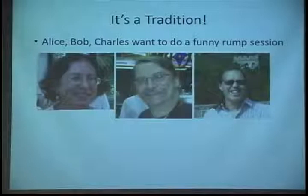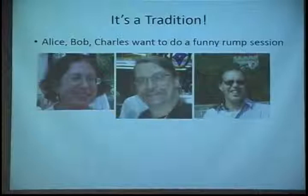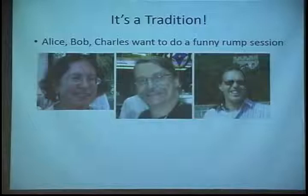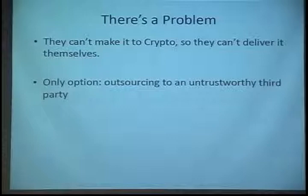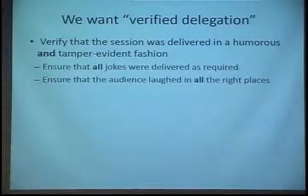This actually motivates the problem that we want to study. Here's the basic scenario: Alice, Bob, and Charles want to do a funny rump session talk. It's a tradition and they do one every year, but they can't actually be here to present it. So what do they do? They outsource it to an untrustworthy party to present. That leads to a verification issue — how do you verify that your delegation occurred and delivered a talk in a humorous and tamper-evident fashion.